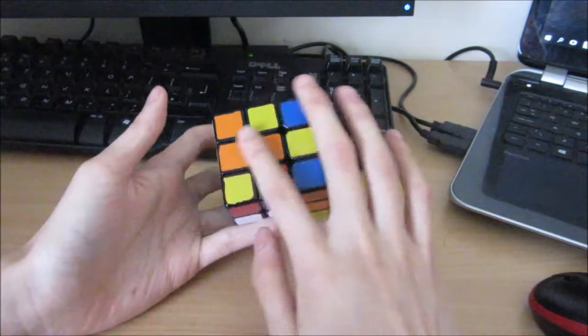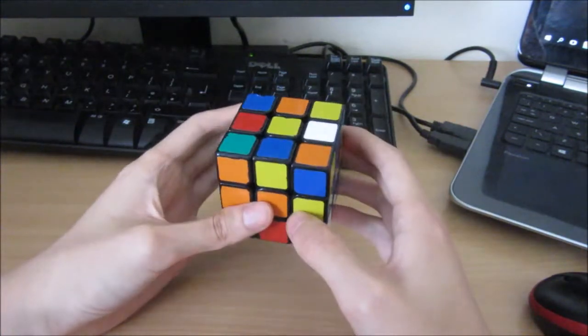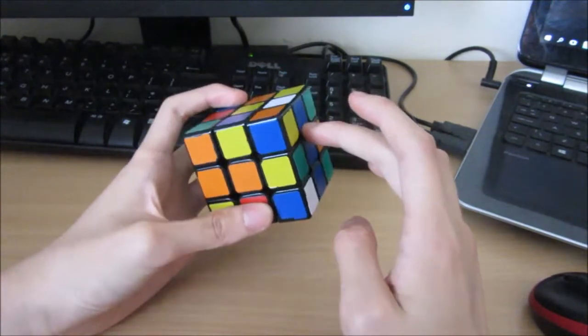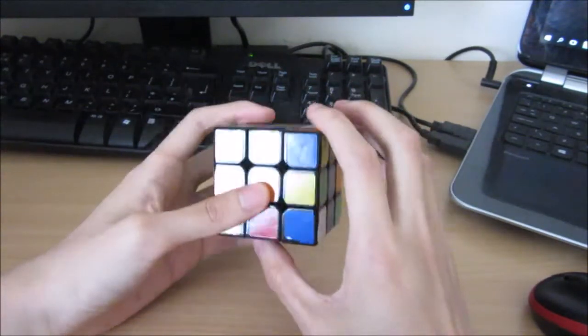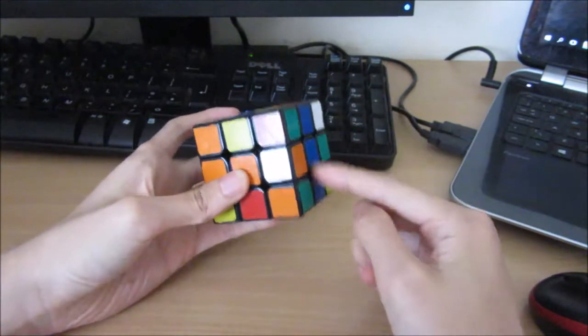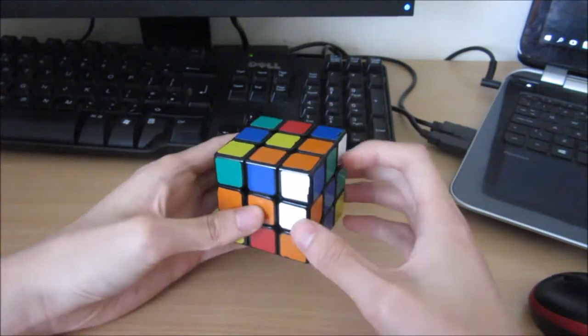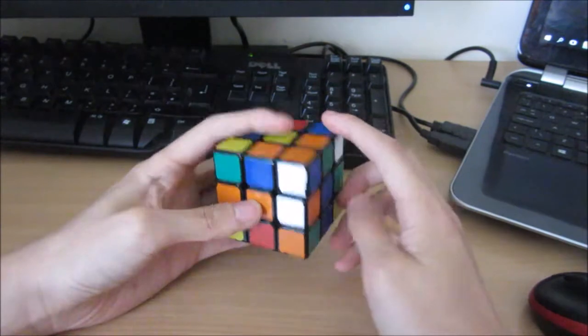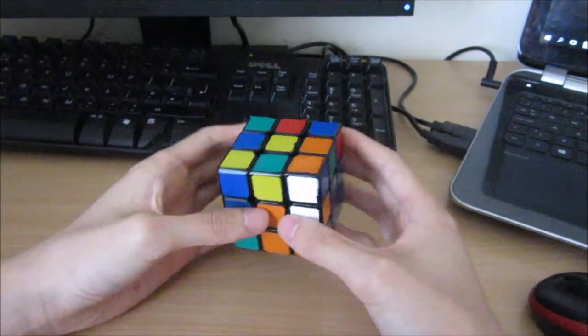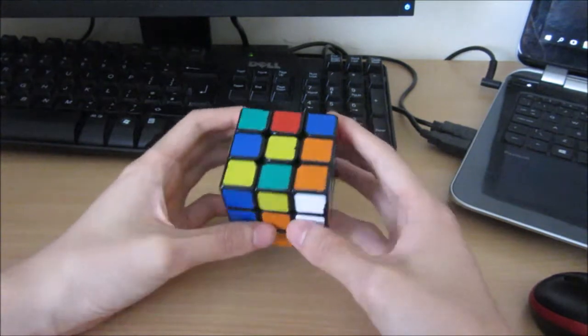And I always build my block in the back right if possible. So now I can expand to here or here, depending on which one seems best. This one looks a bit better. So this one, what I do is, first I put this down here because I recognize that, I sort of recognize this case where you can just do this. And just finish the 2x2x2.